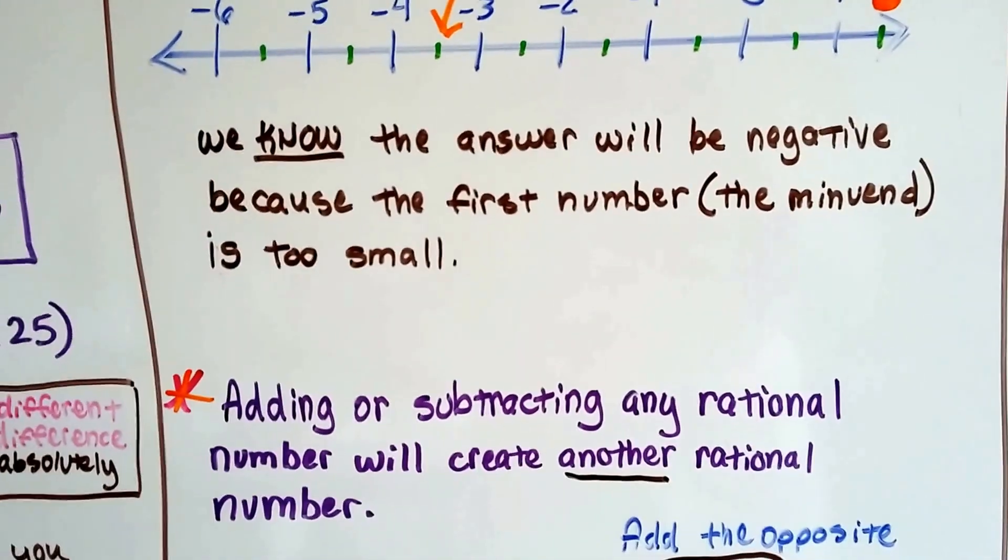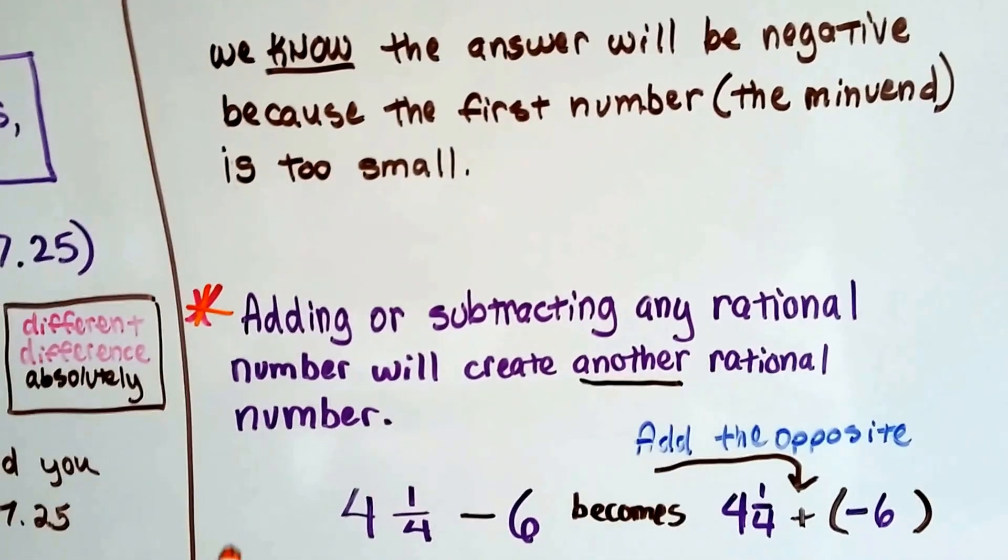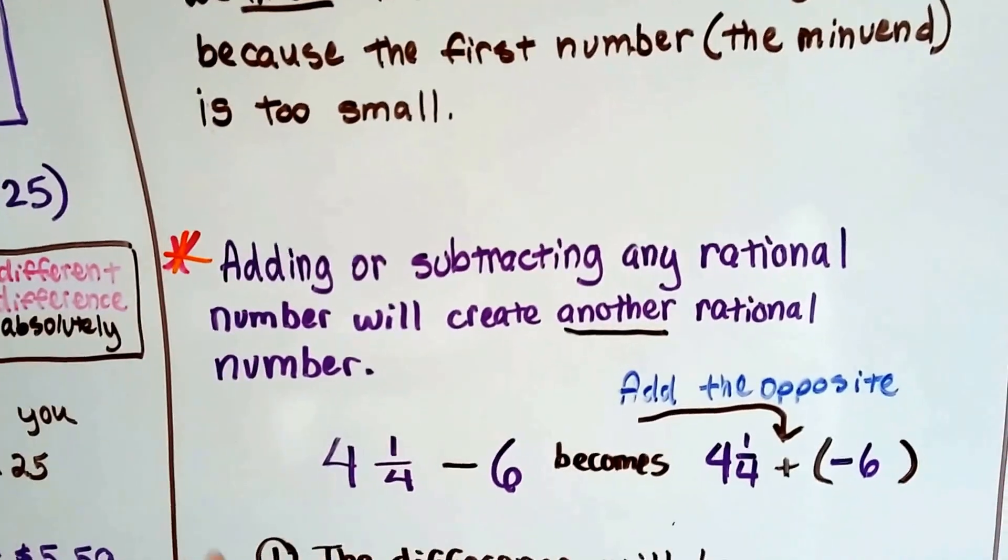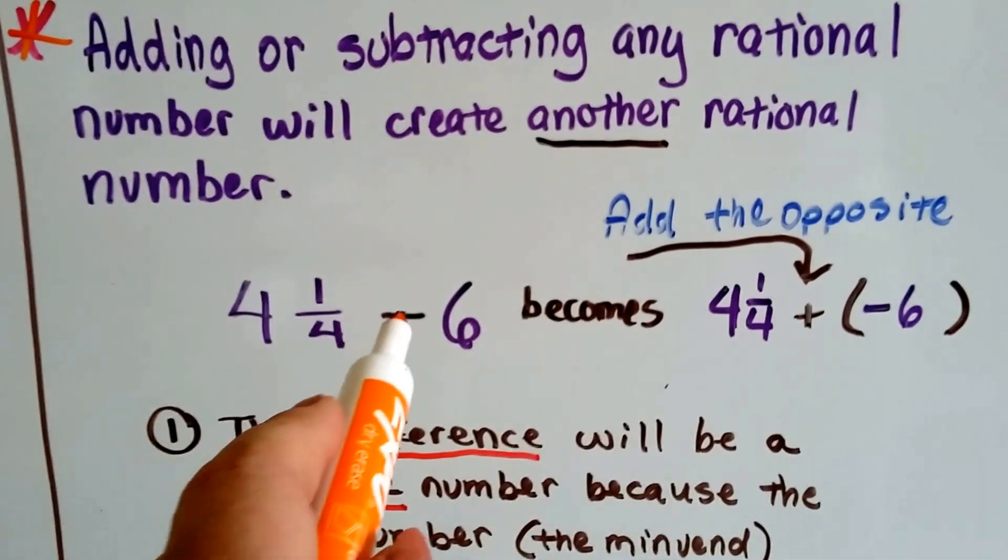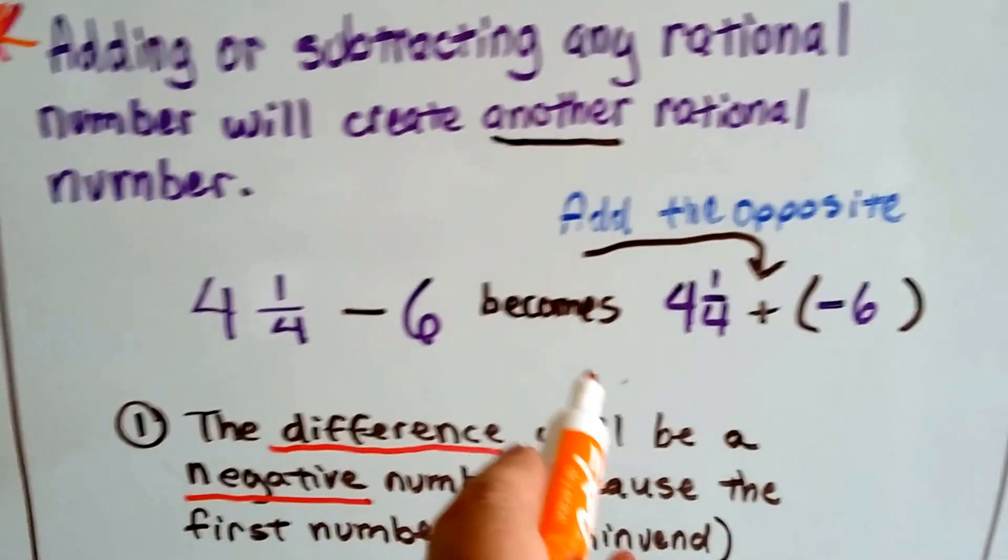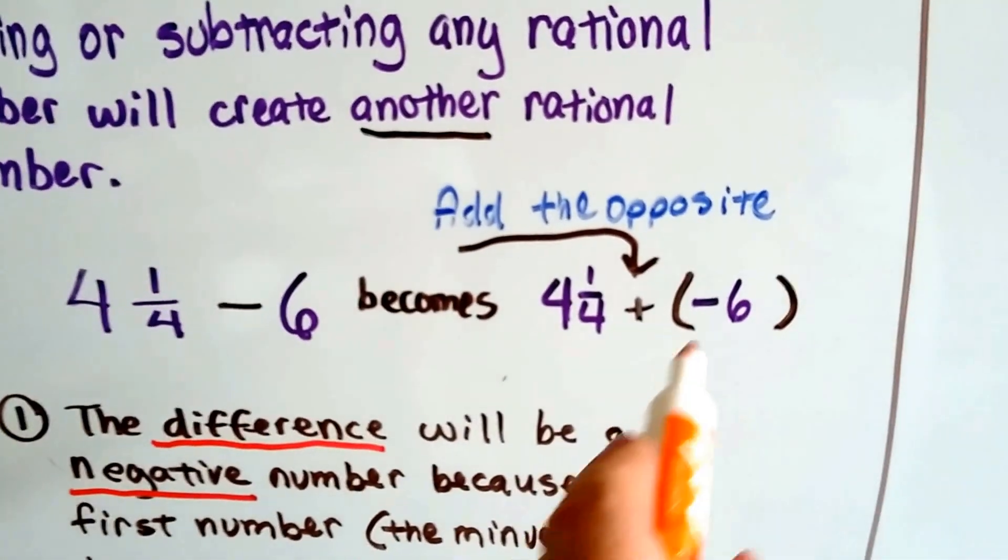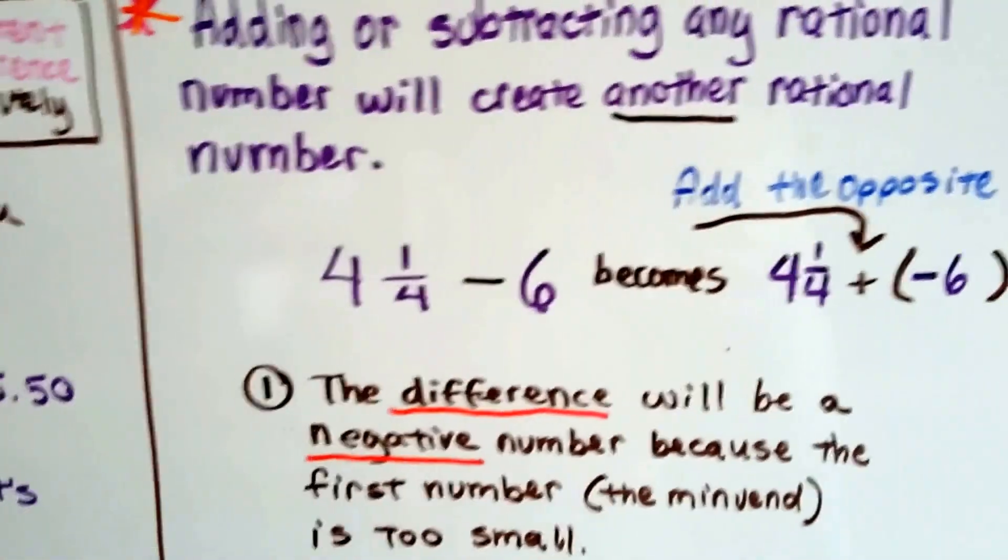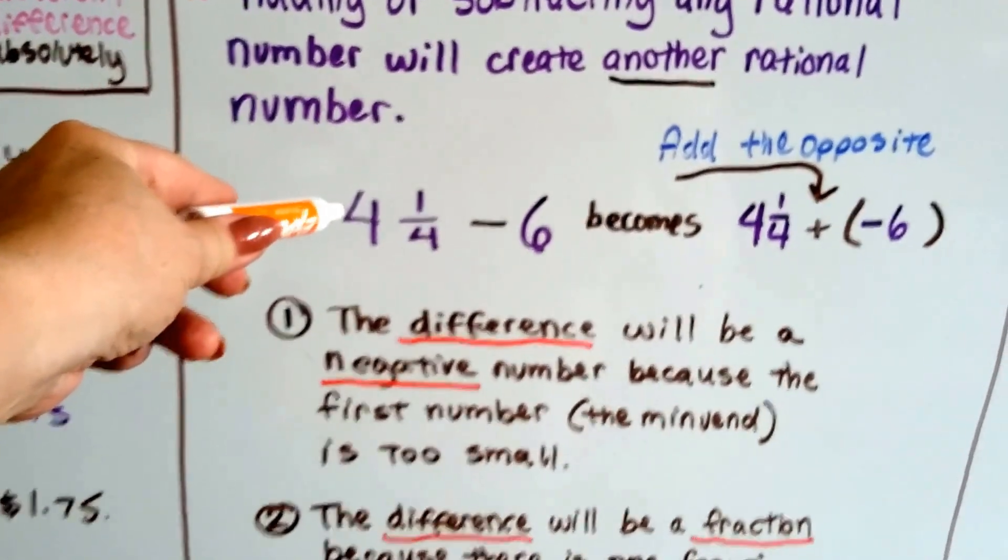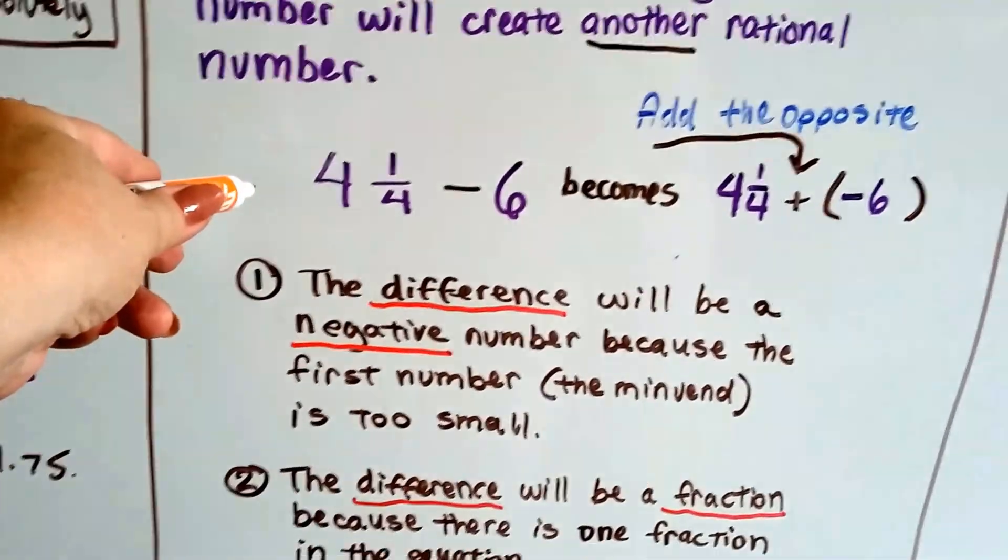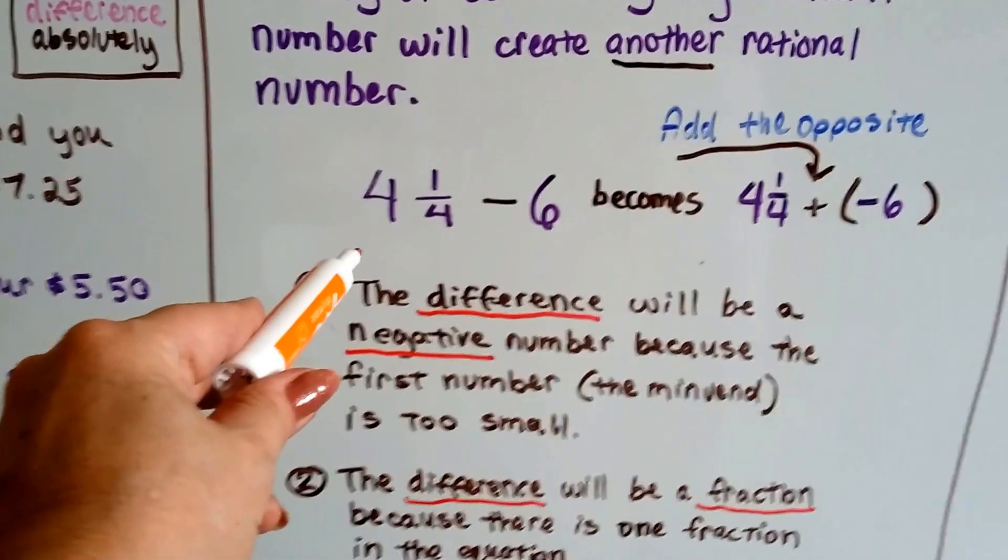We know that if we're adding or subtracting any rational number, that we're going to create another rational number. If we have 4 and 1 fourth and want to take away 6, we're going to add the opposite. It's going to become 4 and 1 fourth plus negative 6. Now, the difference will be a negative number because the first number, the minuend, is too small. So it's going to shove us into the negatives. And the difference will be a fraction because there's one fraction in the equation.